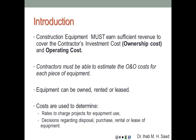Construction equipment must earn sufficient revenue to cover the contractor's investment cost — the ownership cost and the operating cost. Let's treat equipment like an asset. The contractor purchases it to make profit, so we have to account for every expenditure related to the equipment. Contractors must be able to estimate ownership and operating costs for each piece of equipment they own. Equipment can be owned, rented, or leased, though rental or lease costs may sometimes exceed ownership and operating costs.